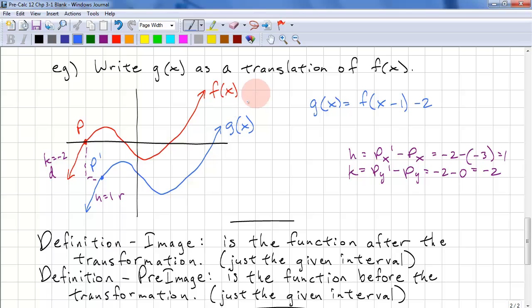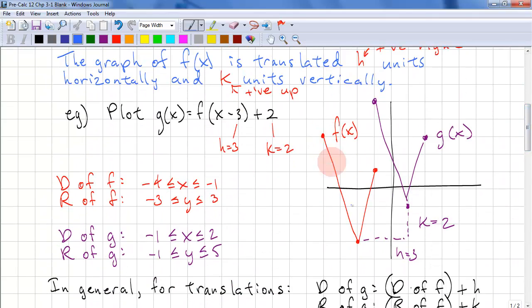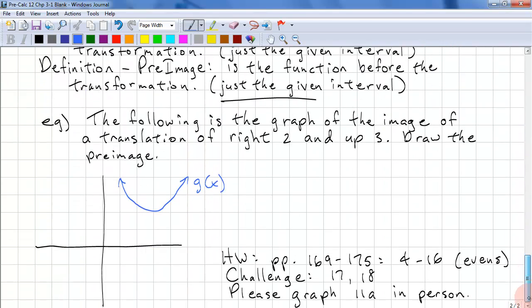The image and preimage are defined as the interval given. Since this is the whole domain, it would be the whole domain on this function. Sometimes we're given just an interval such as this. So that would be the preimage and this is the image.